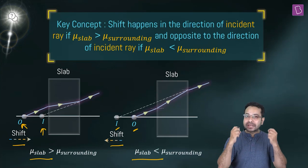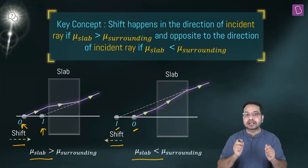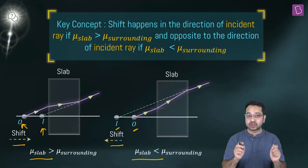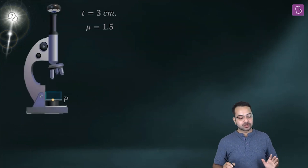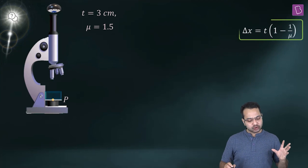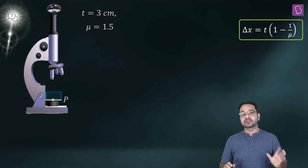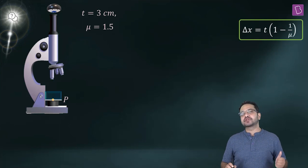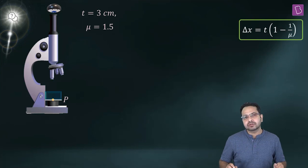This information is very important because we don't just have to tell the magnitude of the shift — we have to tell the direction of shift as well. So there is a microscope focused on point P before the introduction of the glass slab. When the glass slab is introduced, there is going to be a shift in the image.